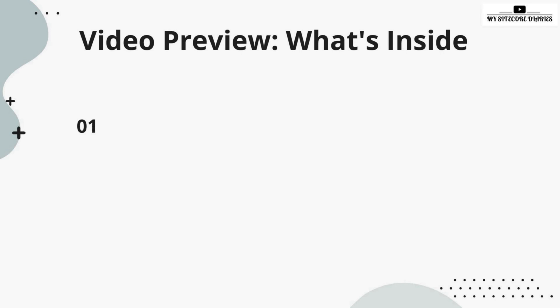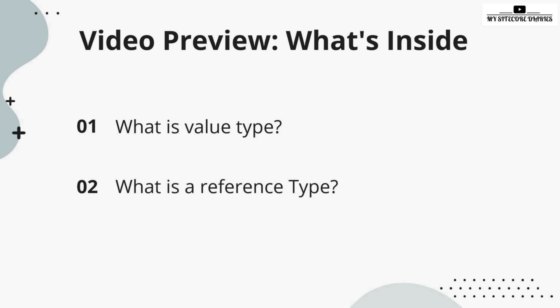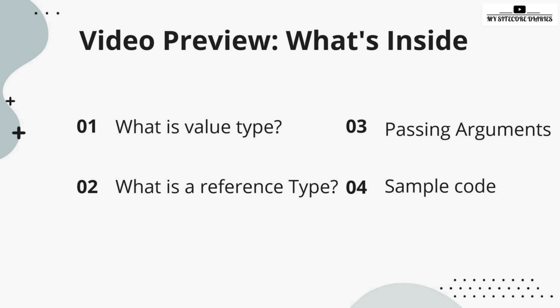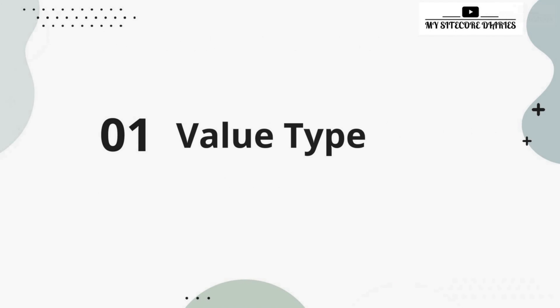In today's episode, first we will answer the question: what is a value type? Then we will move on to answer: what is a reference type? Along with this, we will see passing arguments by value and by reference, and at the end we will see a demo where we will be passing arguments by value and by reference.